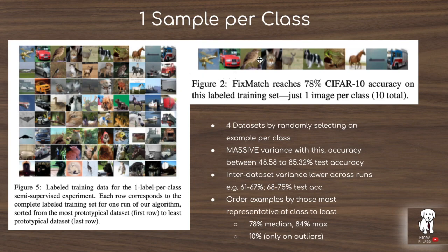In the extreme one-shot learning case — one labeled example per class — when they use the most representative images (selected via an outlier detection algorithm linked in the description), they achieve 78% accuracy, which is remarkable for just one image per class. But when they use outlier images, they get 10%, essentially random guessing. It was interesting to see the performance variance between using the most representative to progressively less representative samples according to this algorithm.